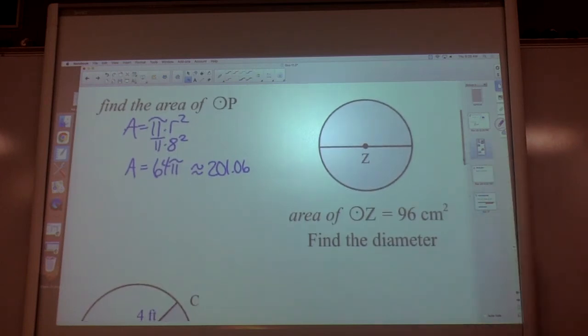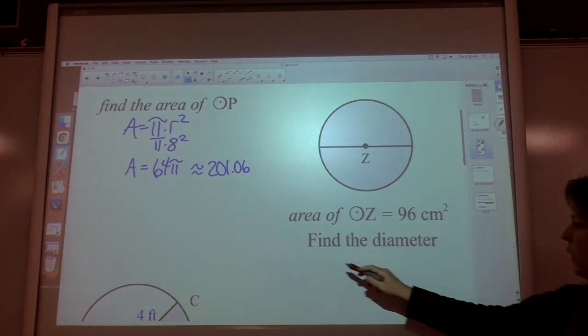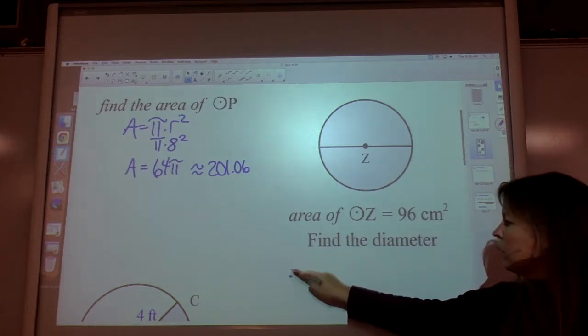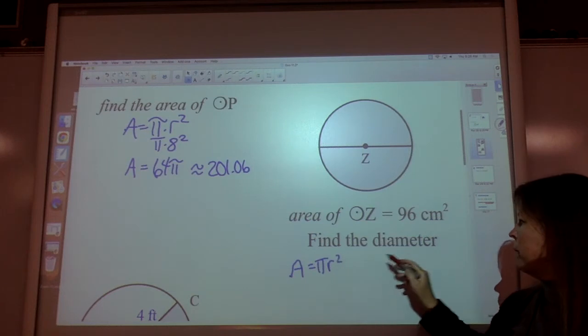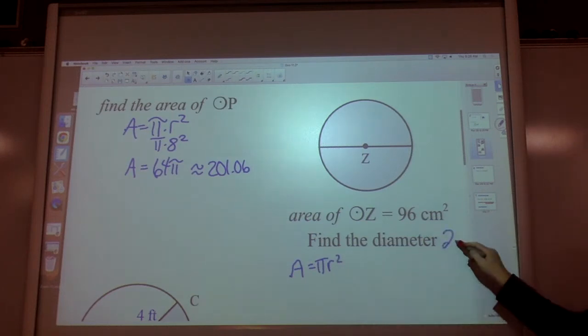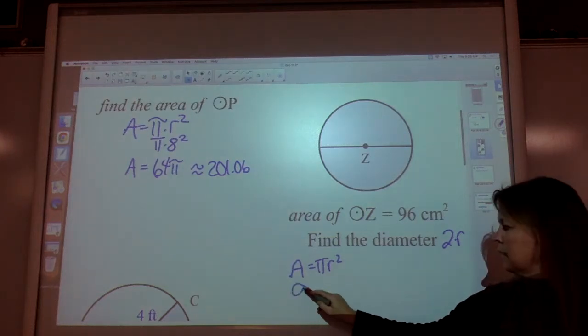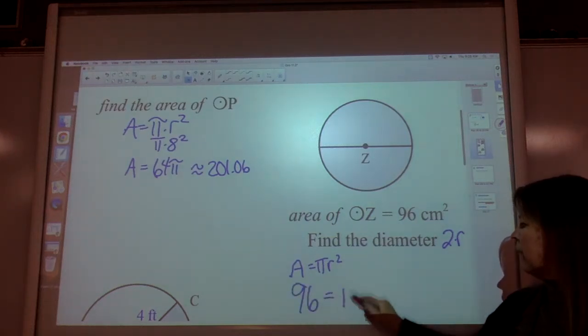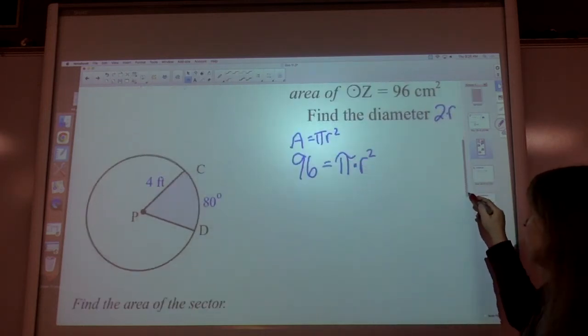And then we do the area formula backwards. What is the area of circle Z? If the area is 96 cm², could we find the diameter? The only area formula that we have to work with is πr². But we know that to find the diameter, we could always double whatever our radius is. So we're going to take 96, set it equal to π times radius squared, work the problem backwards.